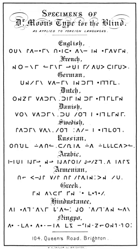Chinese Braille initials generally follow the Pinyin assignments of international Braille. However, J, Q, X are replaced with G, K, H, as the difference is predictable from the final.